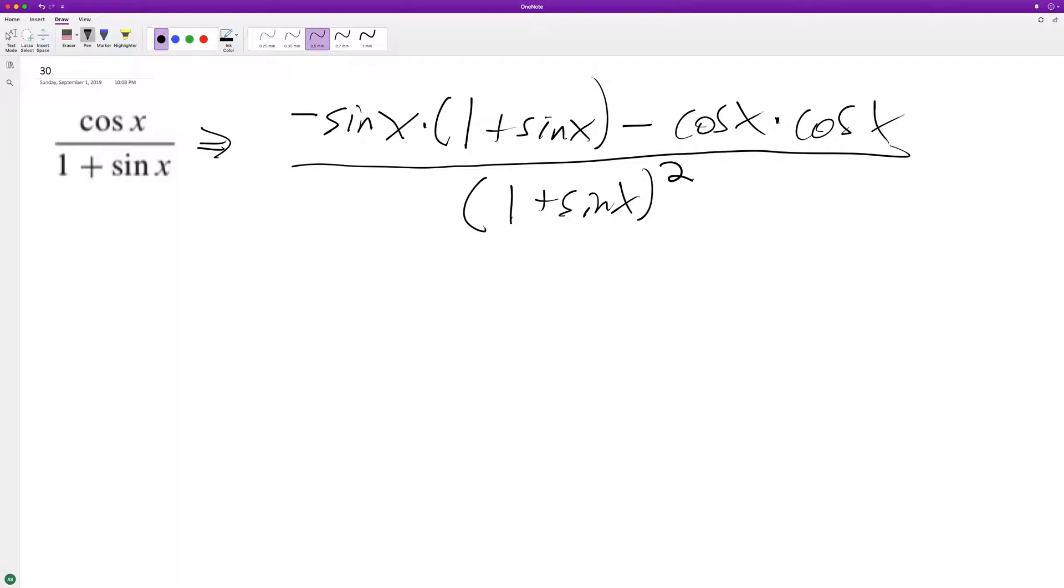So multiplying this out: negative sine of x minus sine squared x and then minus cosine squared x. So we can factor out negative one.